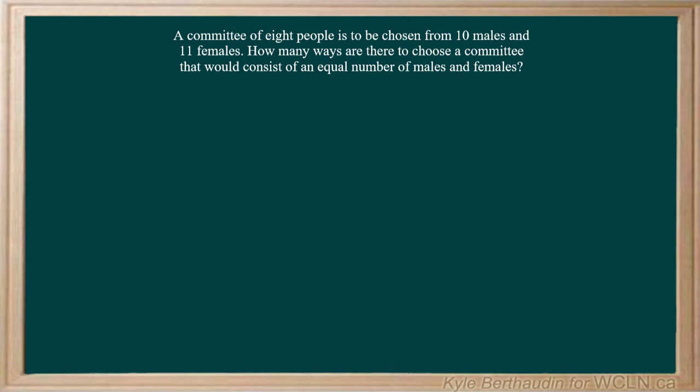So first of all, if our committee is 8 people in total, and we need an equal number of males and females, that means that after we've chosen those males and females, we need there to be 4 males and 4 females. That's the only way that we'll have equal numbers of each.